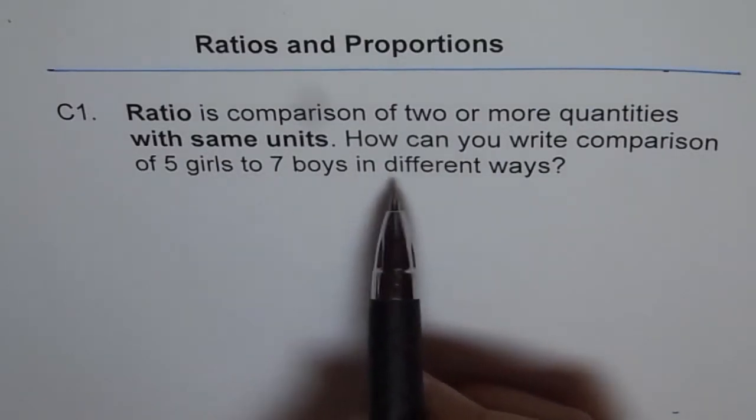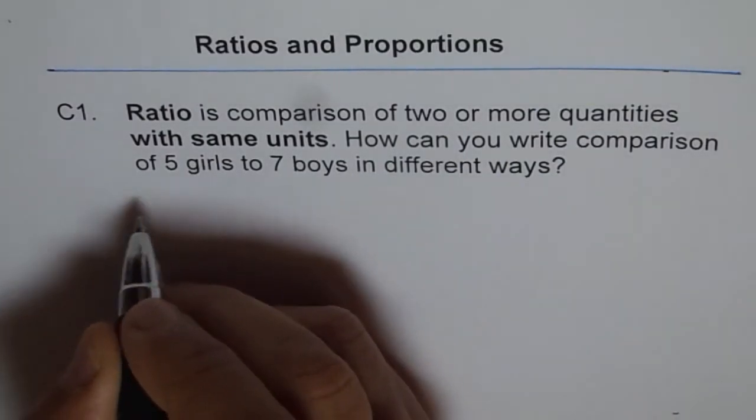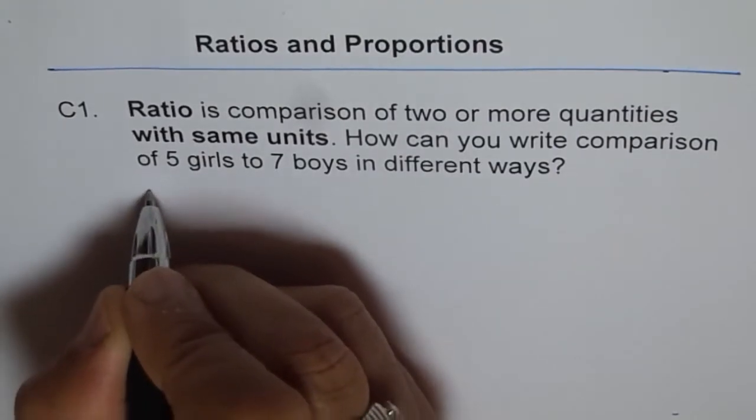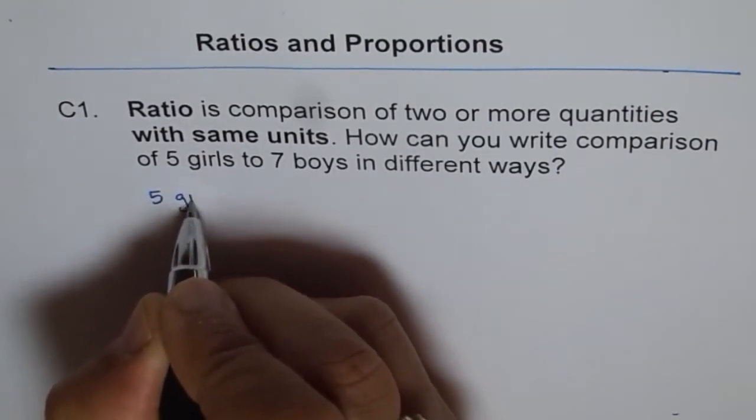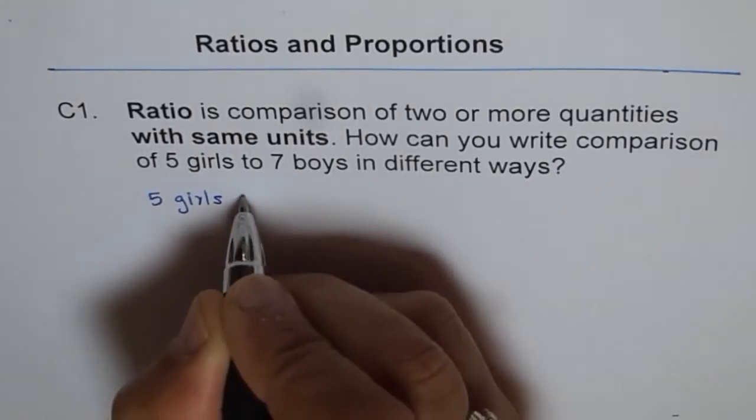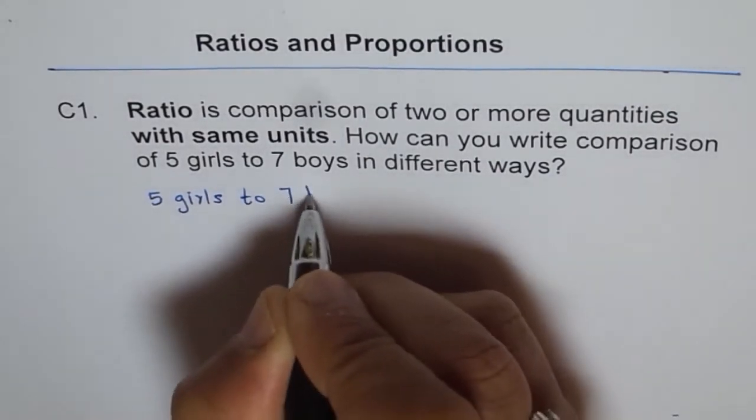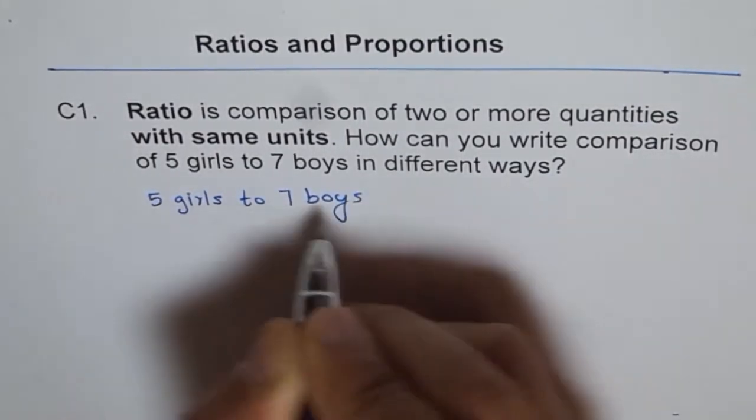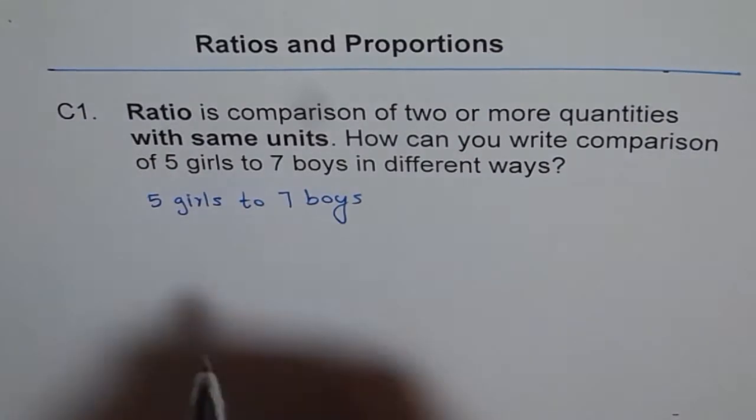We can see five girls to seven boys - that is one way. We get five girls to seven boys. This is also a form of ratio and a form of comparison.